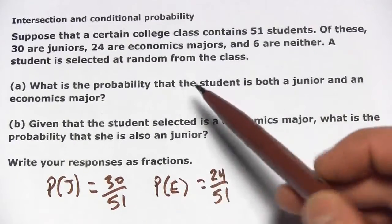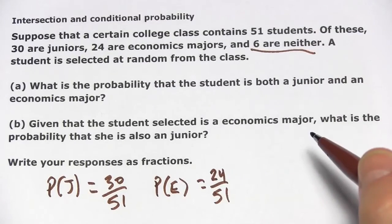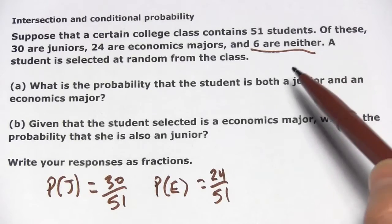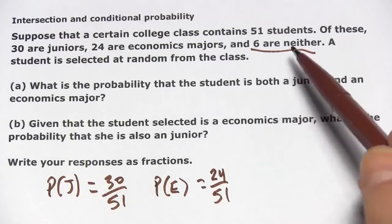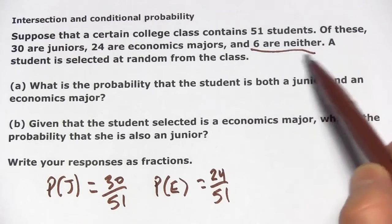And then here's where it gets a little tricky. They're telling us 6 are neither. What does that really mean? Well, the union would be being one or the other or both. This is the opposite of that.